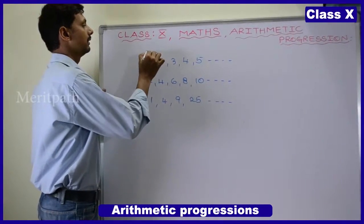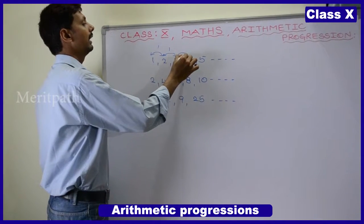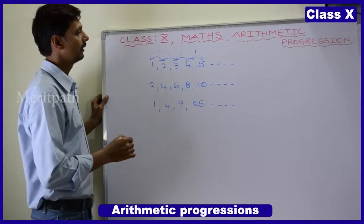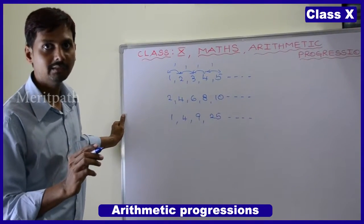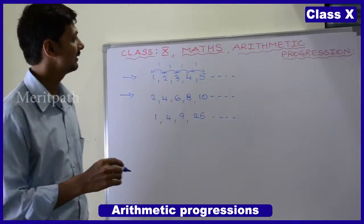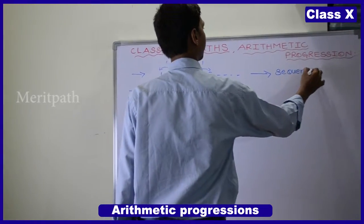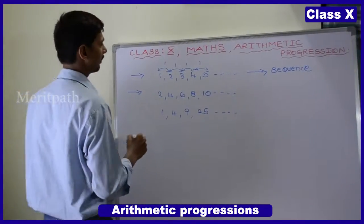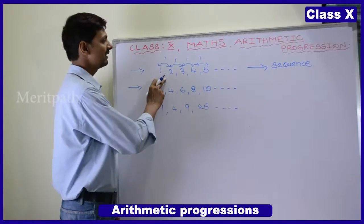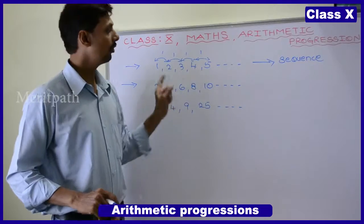Here, the difference between the two numbers is 1. And the difference between these two numbers is also 1. And again, the difference is 1. It is following some of the rules in these numbers. This is called a sequence — these numbers are following some order, some rule, and that rule is called a sequence.